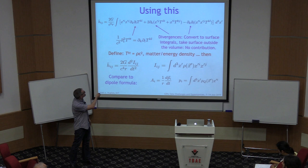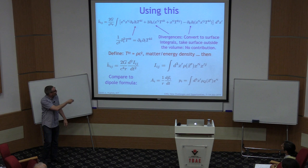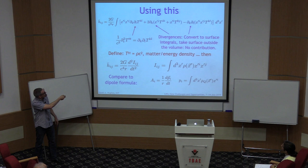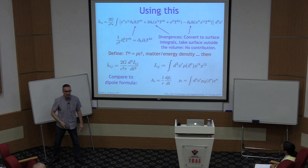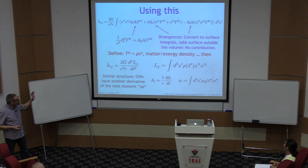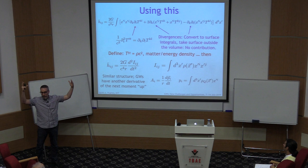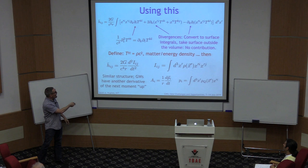This gives us a new formula: the trace-reverse metric perturbation is two time derivatives of an integral over the mass-energy density. This is a more rigorous version of the order-of-magnitude calculation I sketched in the first lecture, where the leading radiation involves integrals with two time derivatives and a one-over-r factor. Compare this to the dipole formula: one time derivative of a single moment of the charge distribution. In general relativity we need the next moment up, and must take another time derivative, because lower moments are protected by conservation laws.